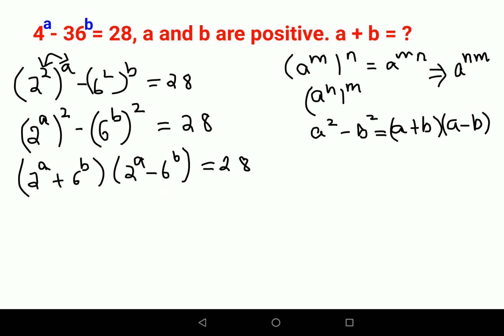Now we can focus on 28. If you look closely, they've said that a and b are positive. So let's write down factors of 28: it can be 28 into 1, then 14 into 2, and also 7 into 4.